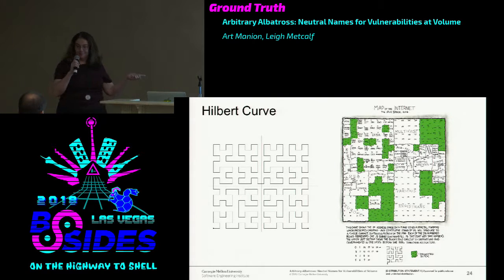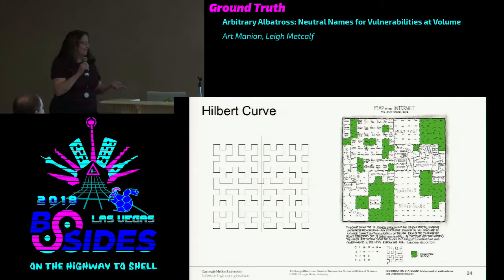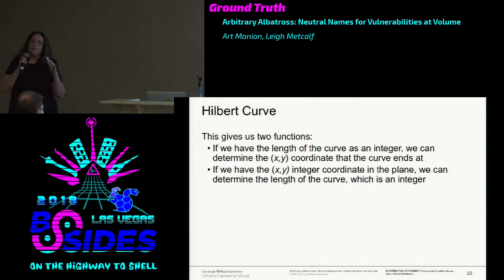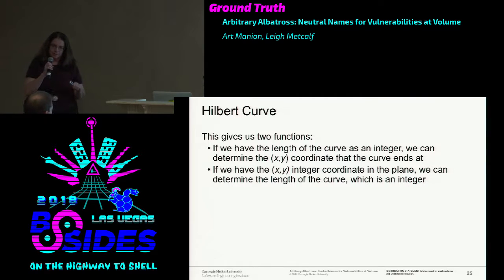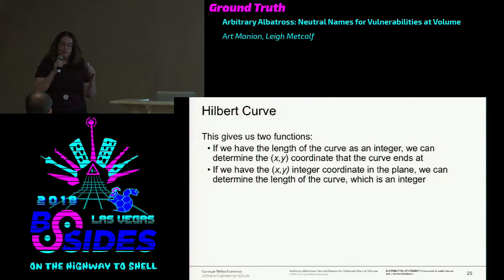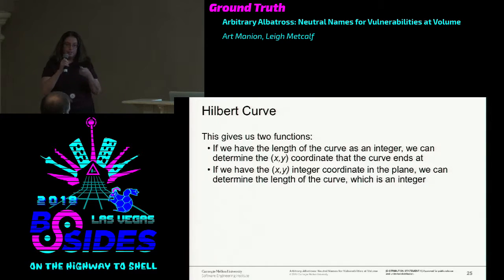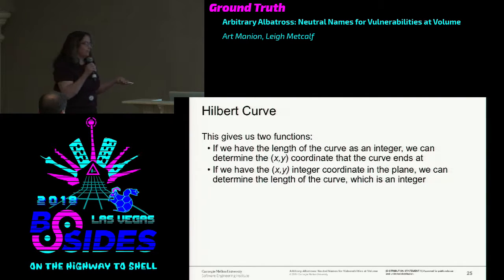You may have seen it in this XKCD. And if you buy my book, you'll see how to make this XKCD cartoon out of it—I also talk about why it's actually not a great visualization. It gives me two functions: if I know the length of the curve, I know the point XY that it ends up in; and conversely, if I know X and Y, I know the length of the curve. Now I can take my integer and map it to two integers.